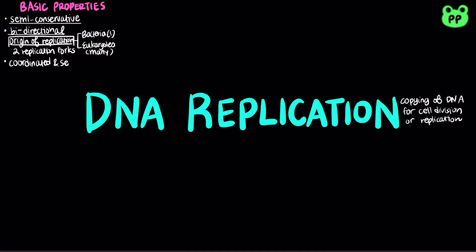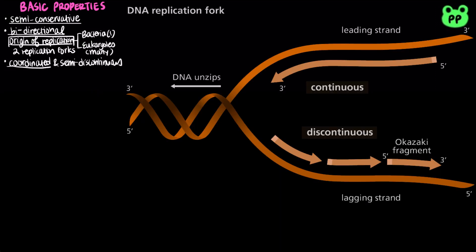Lastly, DNA replication is coordinated and semi-discontinuous. DNA replication is carried out by DNA polymerases, which only adds nucleotides to the free 3' end of a growing strand. Therefore, DNA synthesis can only proceed in the 5' to 3' direction.